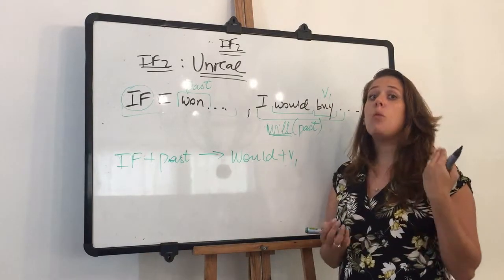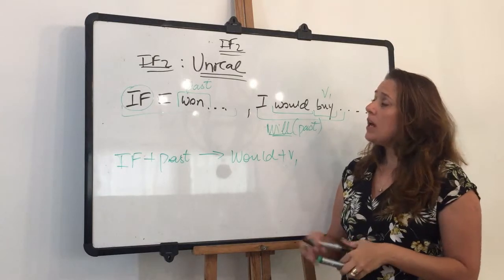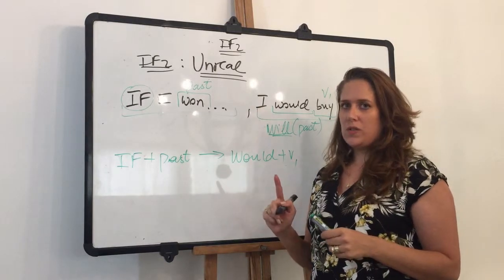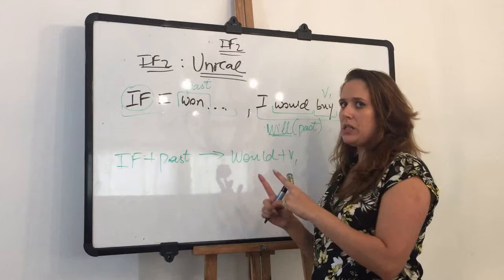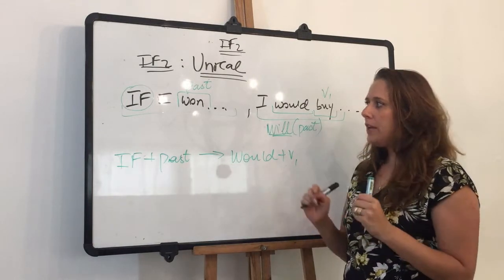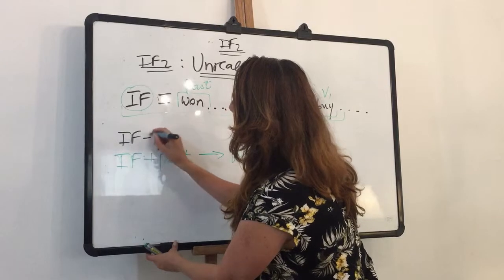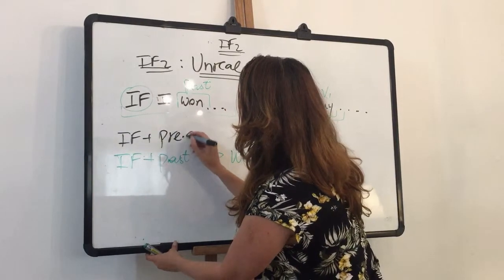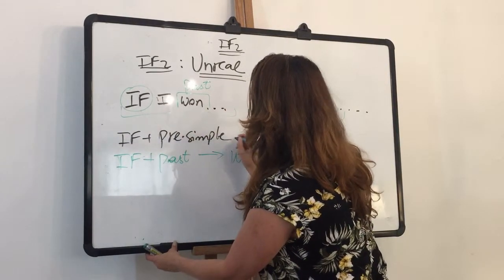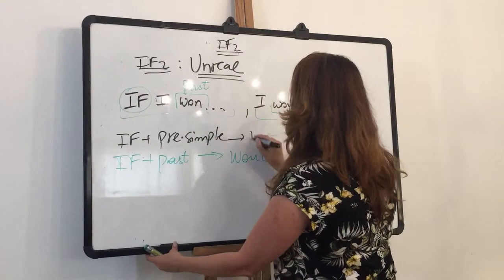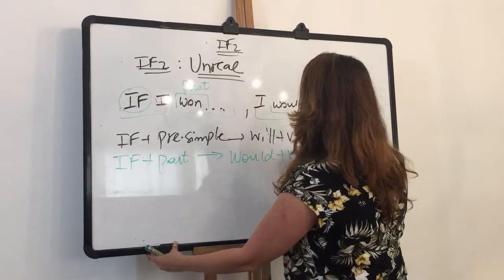Now if I take a look at if one, if one talks about real situations. If two talks about unreal situations. Now if one, if one is if plus present simple, the result would be will plus base verb.